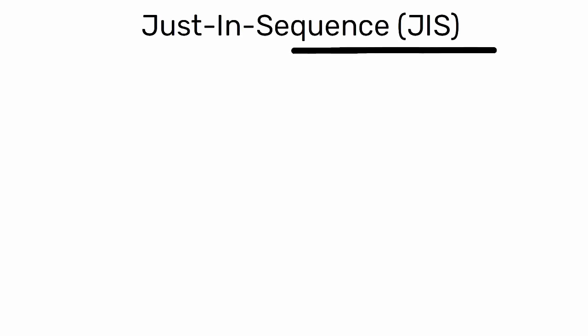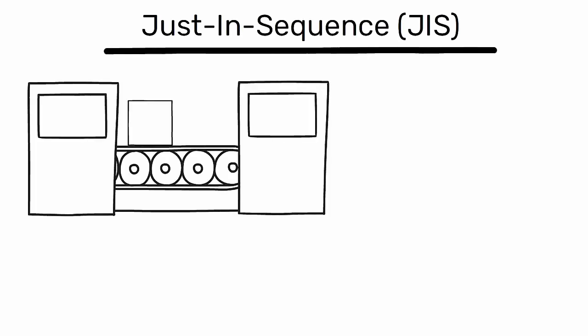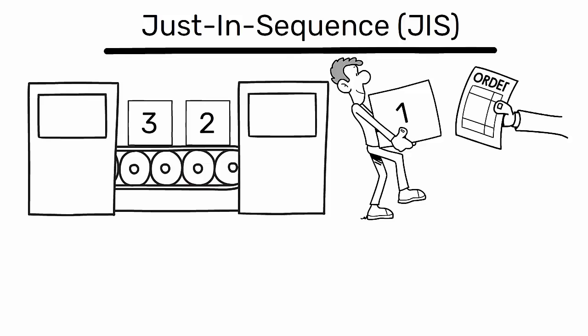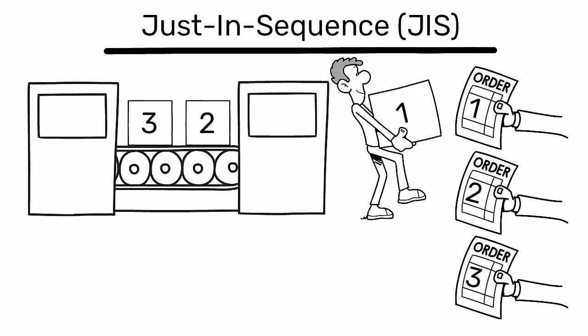Just-in-Sequence, J-I-S, is a production strategy that aligns the manufacturing sequence directly with the order of customer demand.